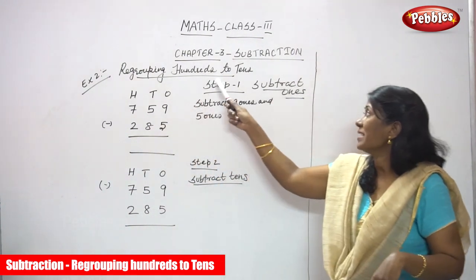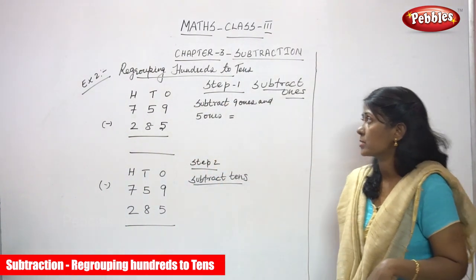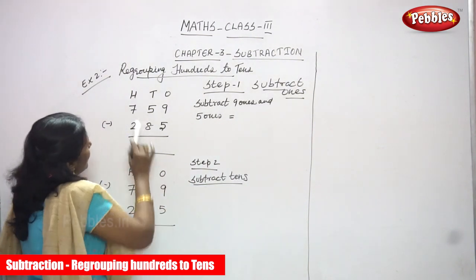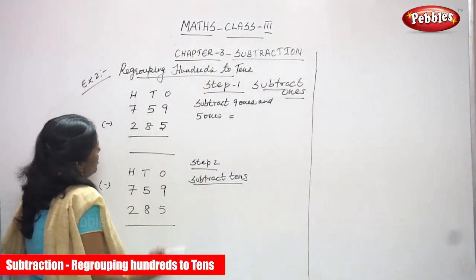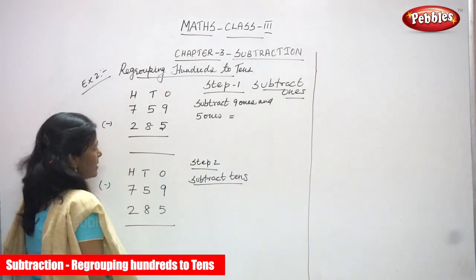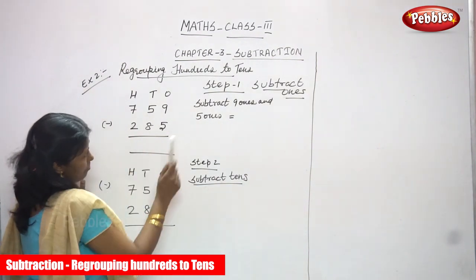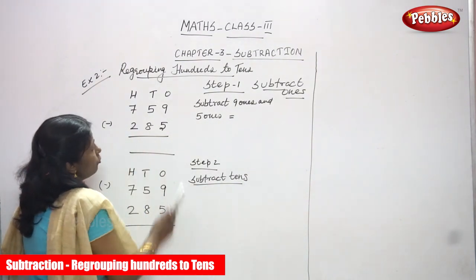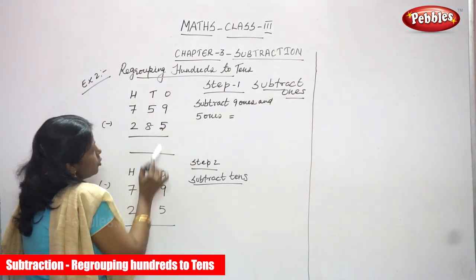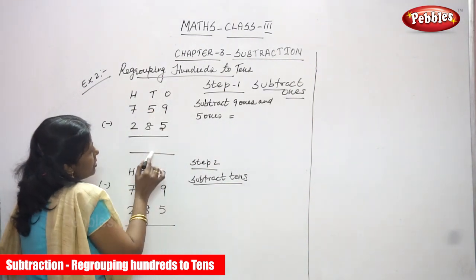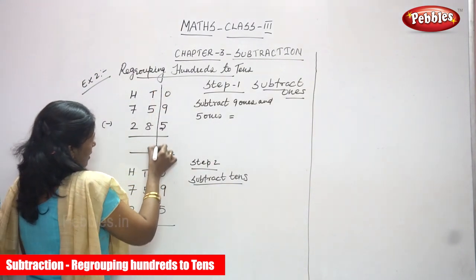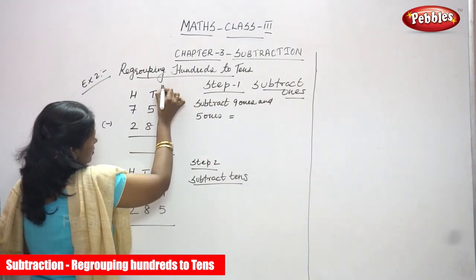Now we are going to do regrouping hundreds to tens. Look at the example. The first sum is hundreds, tens and ones. Seven, five, nine — the first number. The second number is 285. Step one: subtract ones. We are going to subtract the ones, so we have to concentrate on the ones first.